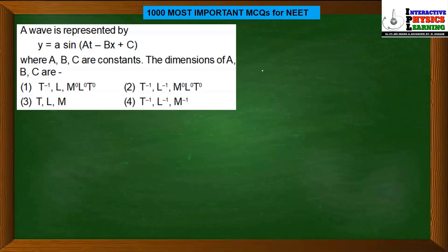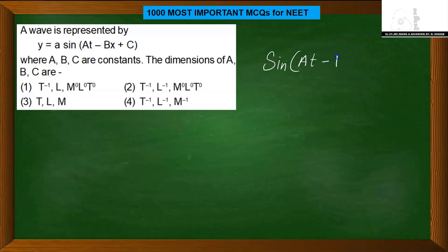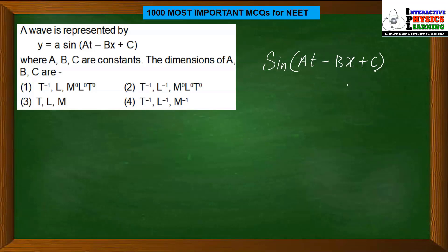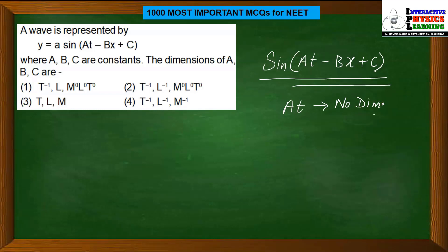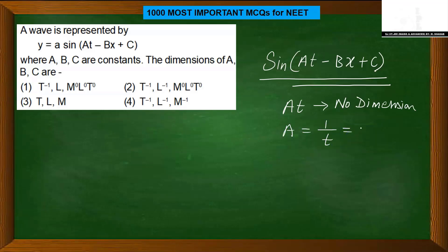Next question: a wave is represented by y = A sin(at - bx + c), where a, b, c are constants. We need to find the dimensions of a, b, and c. The entire sine function is a trigonometric function, which is always dimensionless. So its argument (at - bx + c) is also dimensionless. This means 'at' is dimensionless, so the dimension of 'a' must be 1/T = T⁻¹.